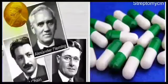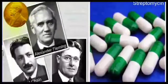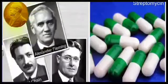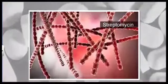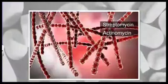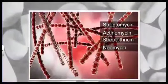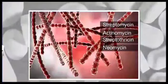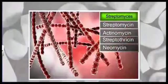Nowadays, many other medicines like many different antibiotics are being produced from so many other microbes like bacteria, actinomycetes and so many. Some examples are streptomycin, actinomycin, streptothricin, neomycin and so on which are produced mainly by Streptomyces.